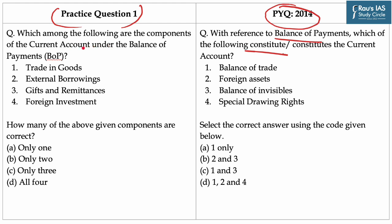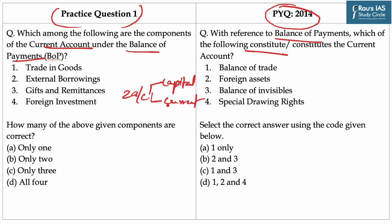Which of the following are components of the current account under balance of payments? Now, balance of payments records the transactions in goods, services and assets between the residents of a country with the rest of the world for a specific period of time. There are two accounts: the capital account and the current account. This question asks us to identify the components of the current account.